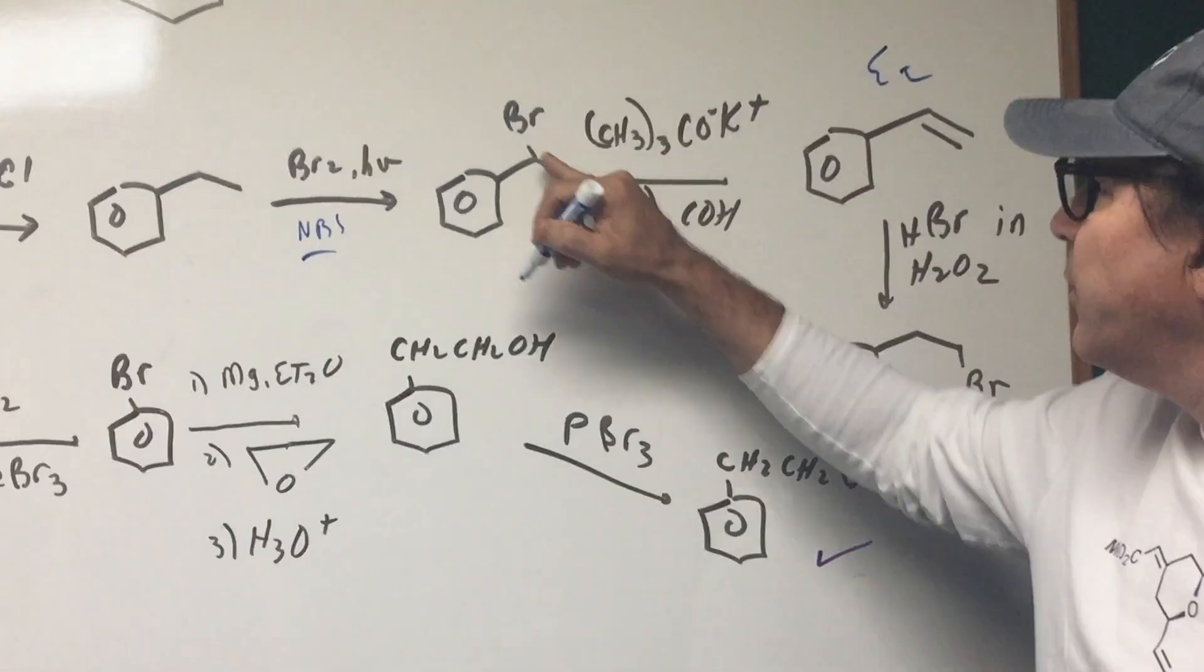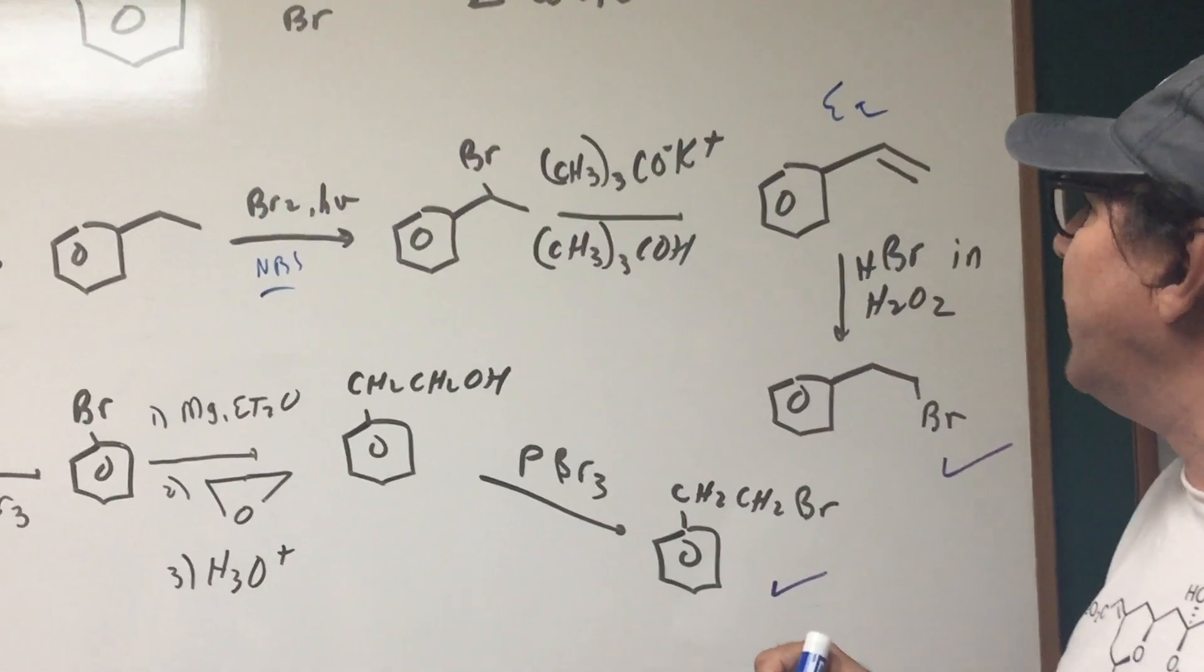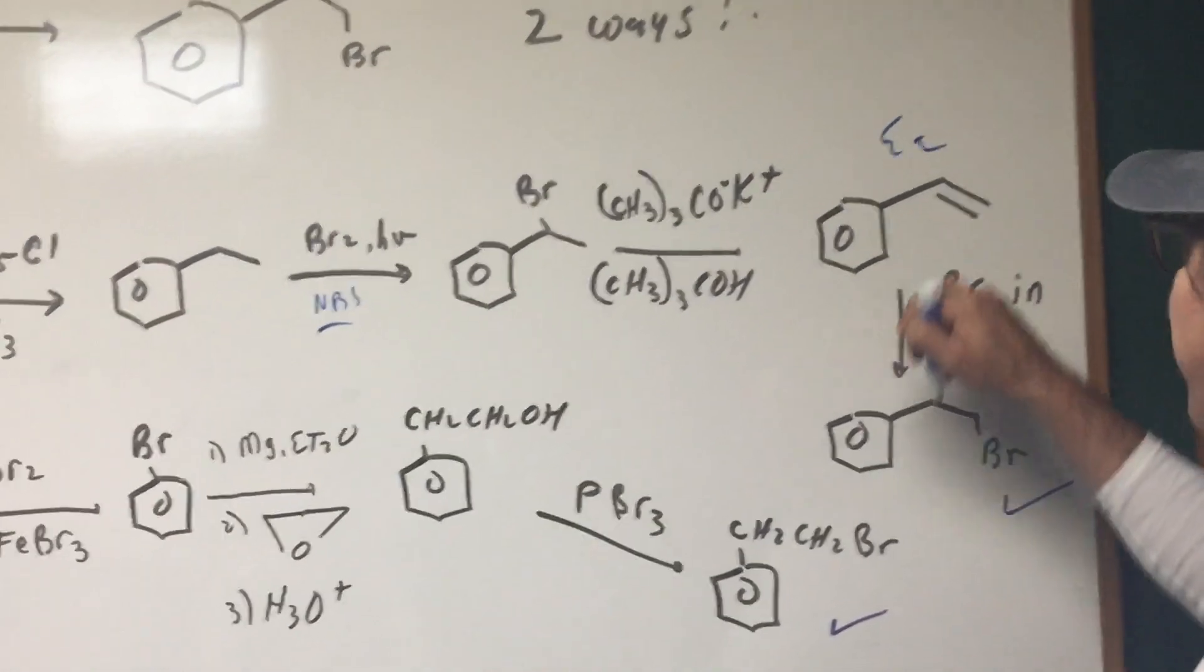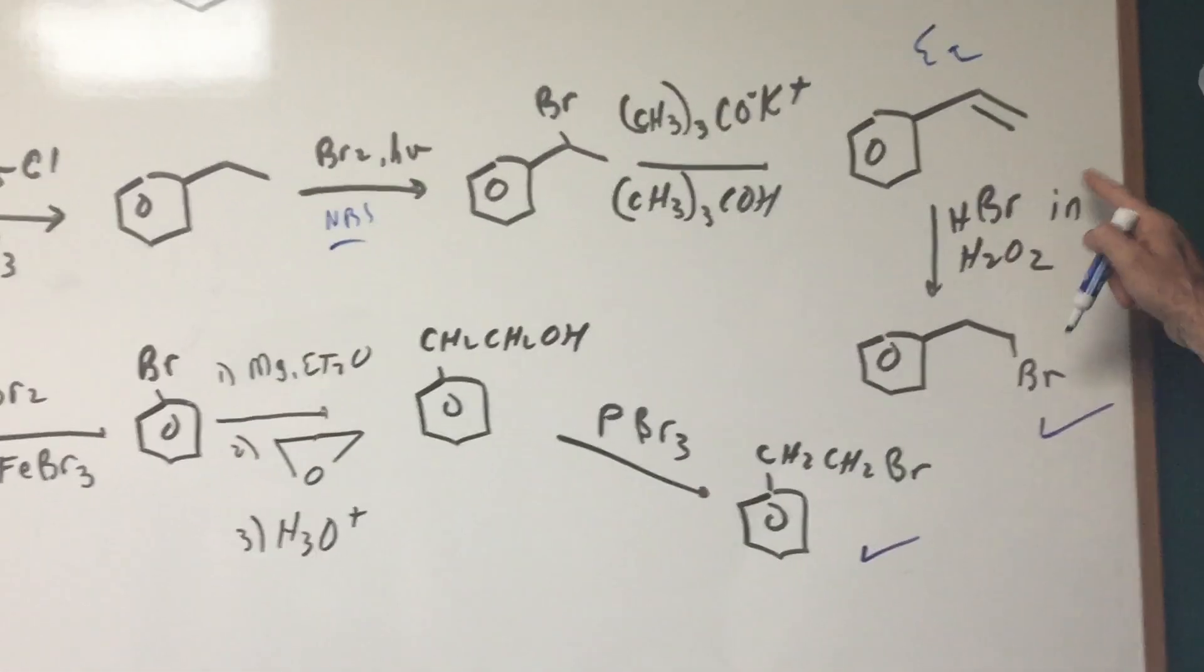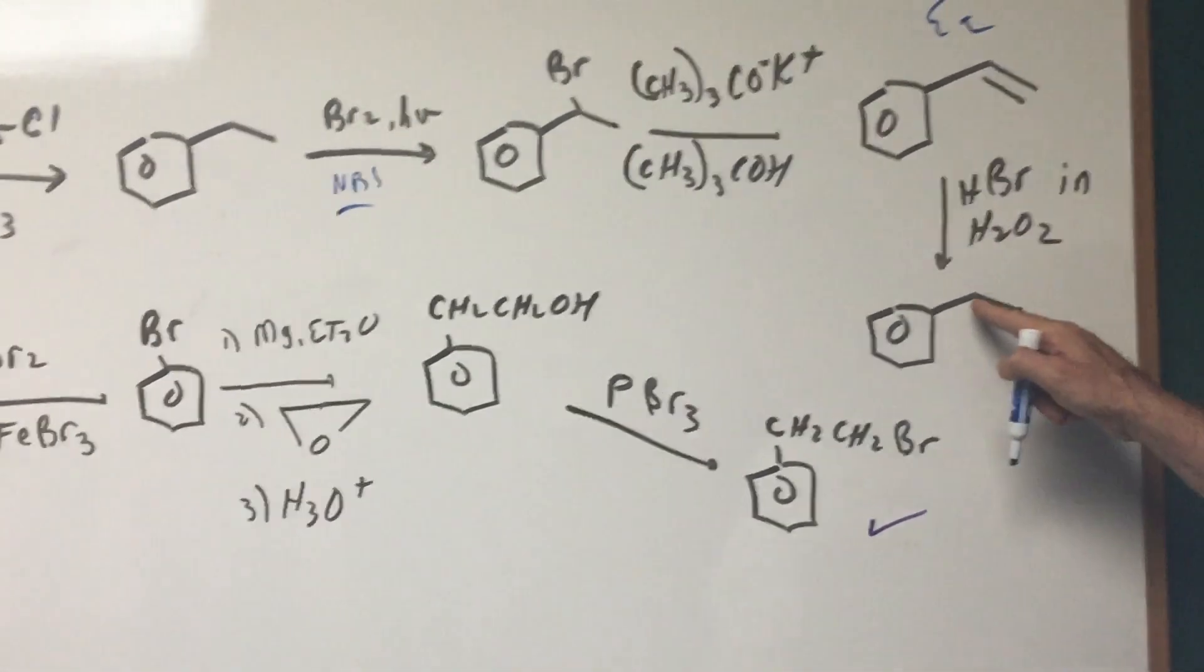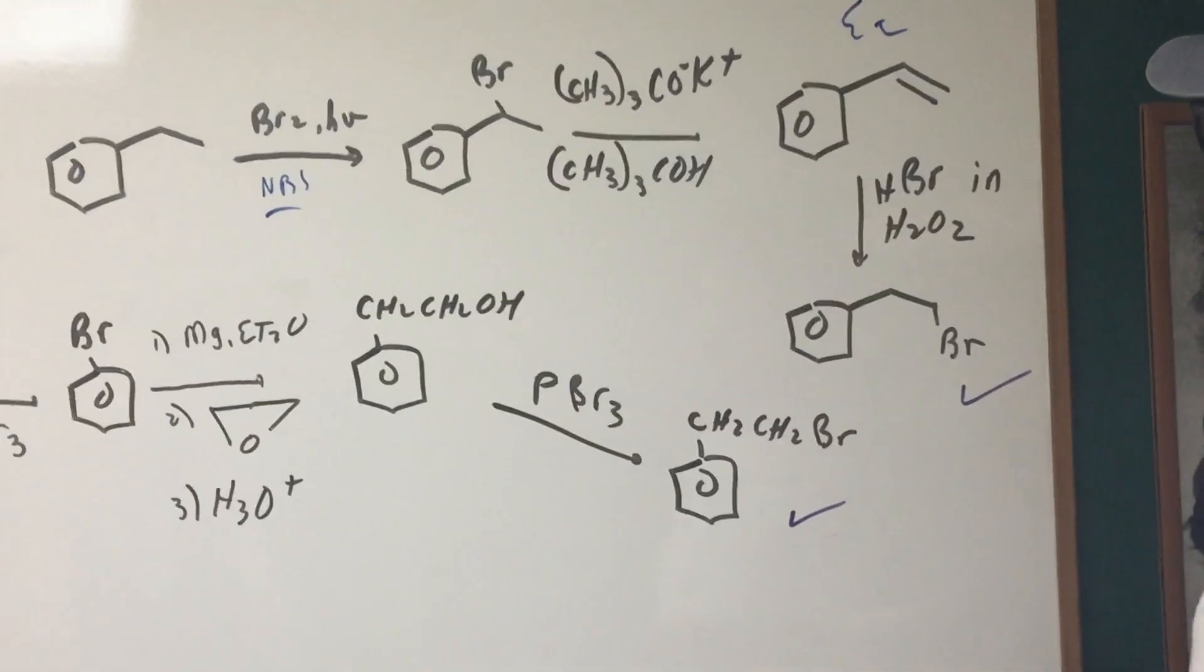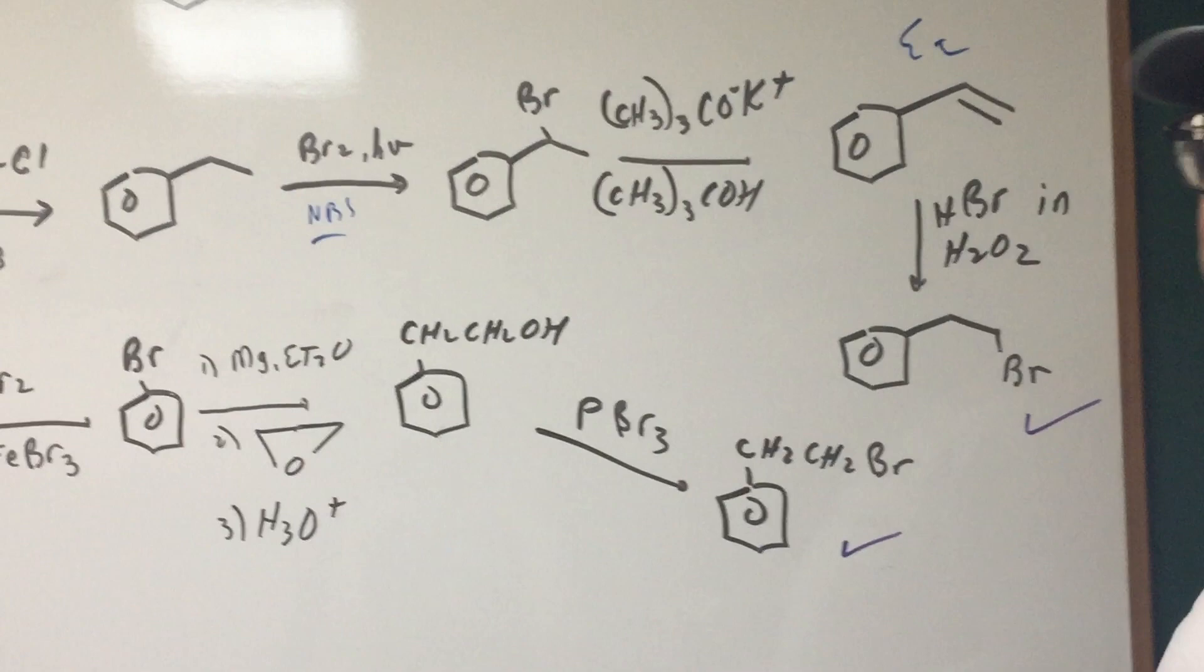There's my E2 product after I treat it with potassium t-butoxide. And then the final step, I use some good alkene chemistry. HBr and peroxide simply puts the bromine to the outside, anti-Markovnikov.